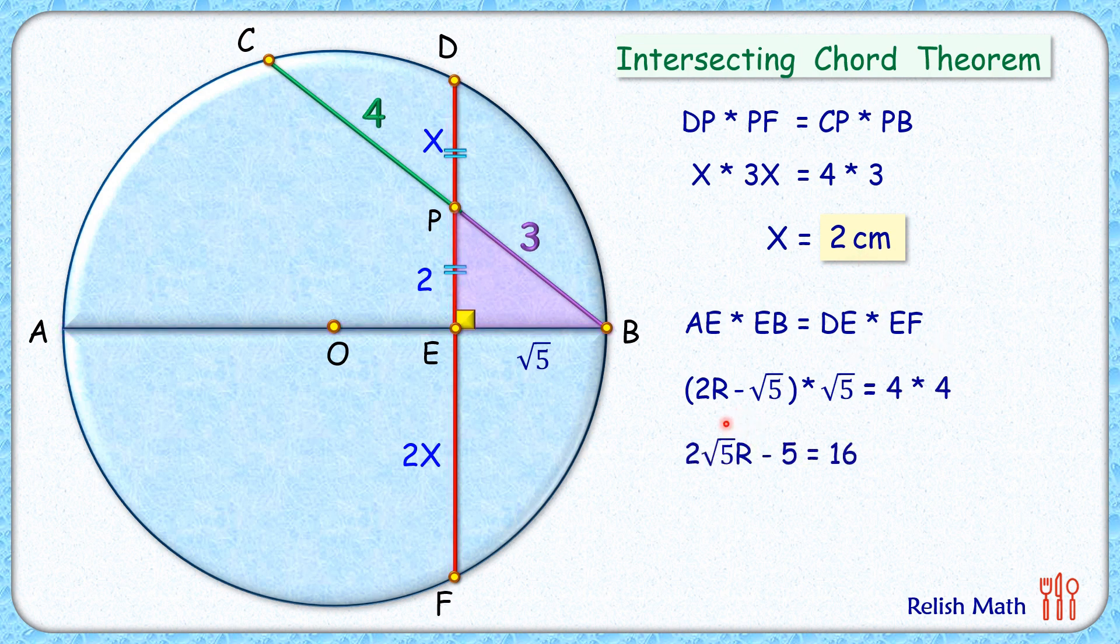Simplifying it, we'll get 2 root 5 R minus 5 equals 16. Simplifying it further, we'll get R as 21 upon 2 root 5, which in decimal form is 4.7 cm, and that's our answer.